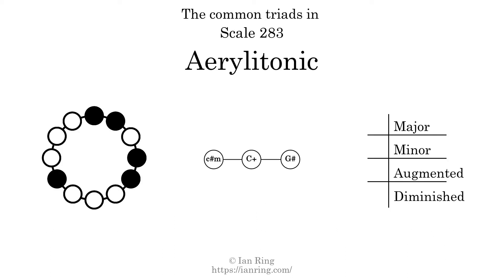There is one major triad. There is one minor triad. There is one augmented triad. There are no diminished triads. Here is a Hamiltonian path of parsimonious voice leading that uses all the triads.